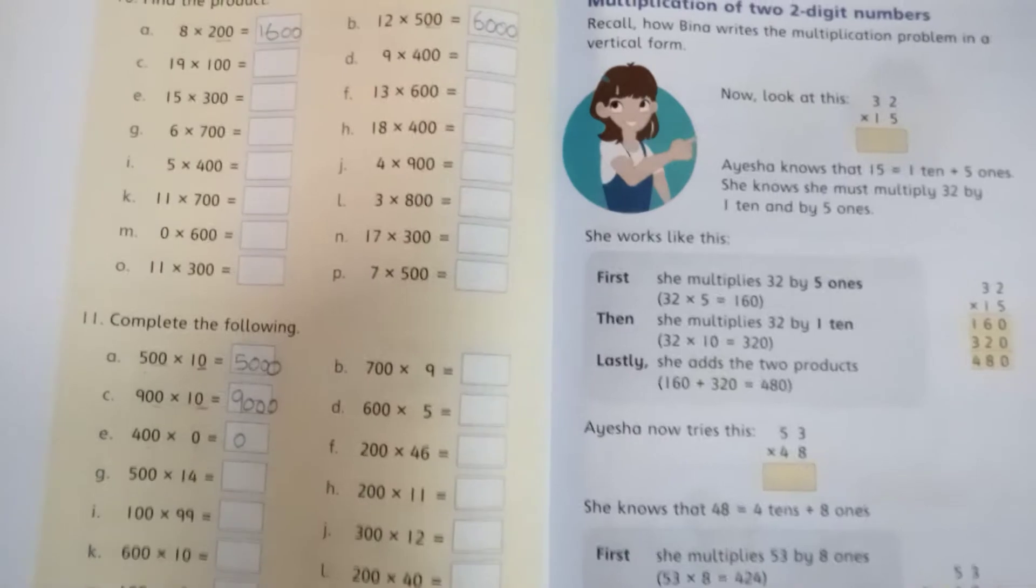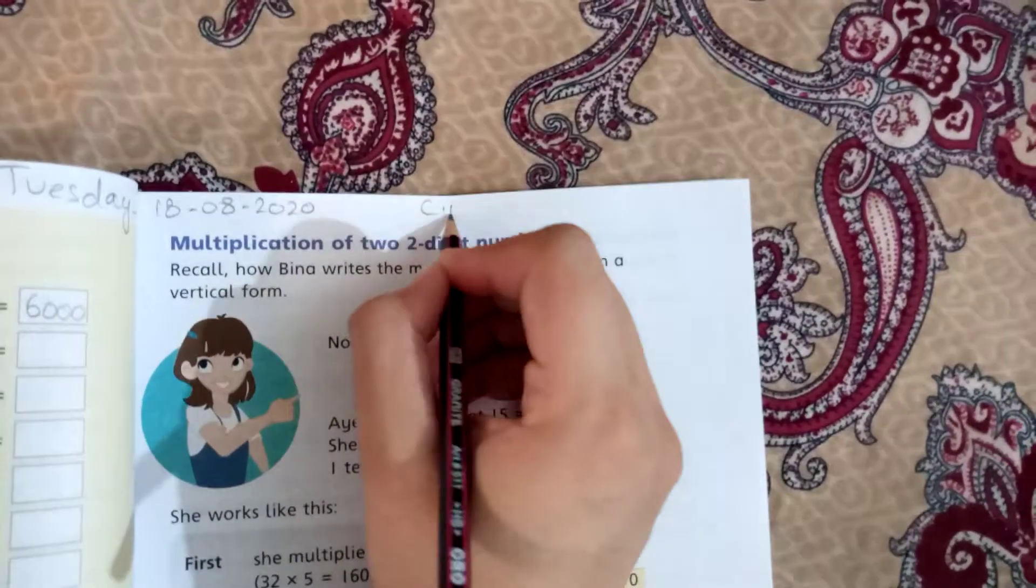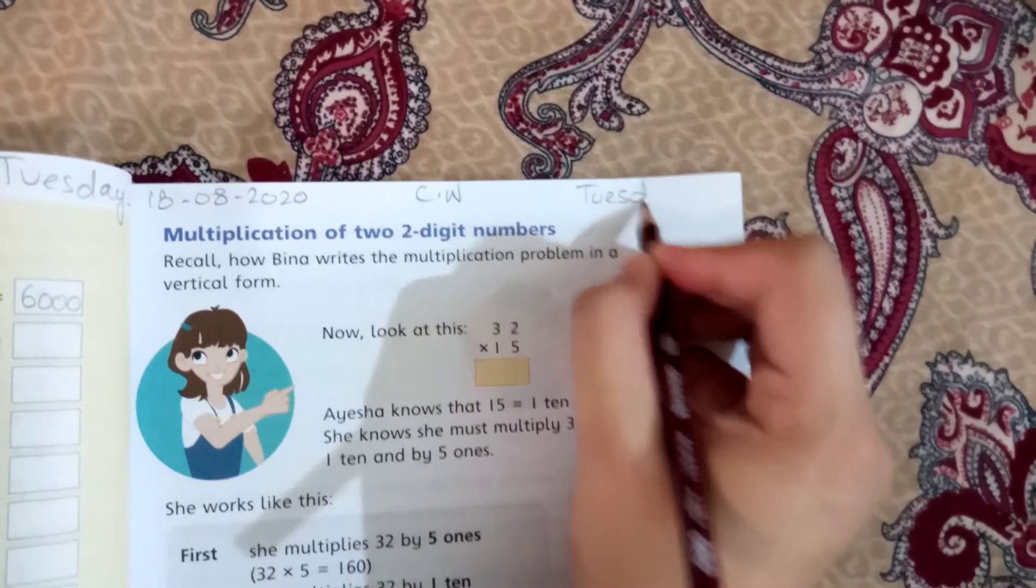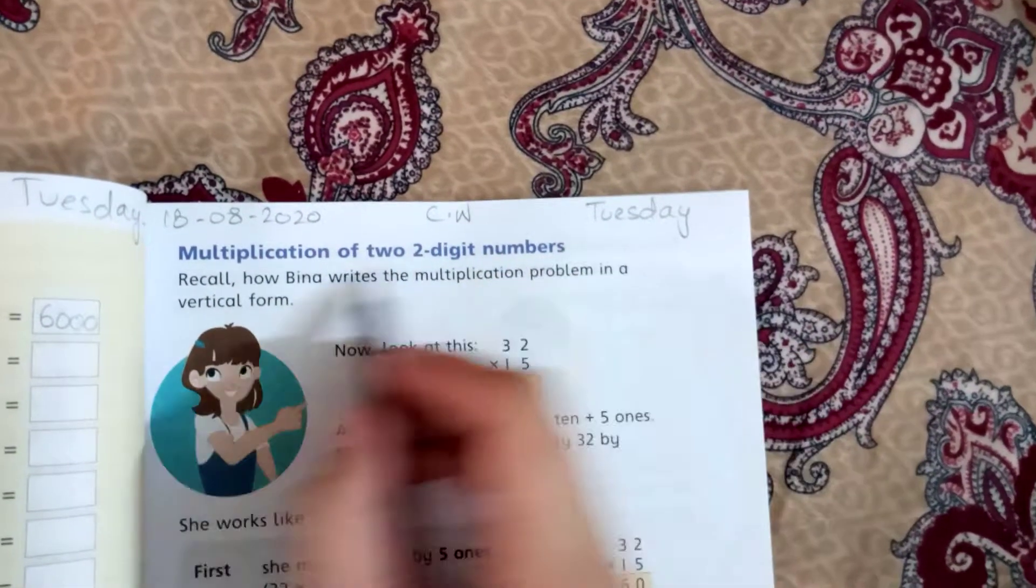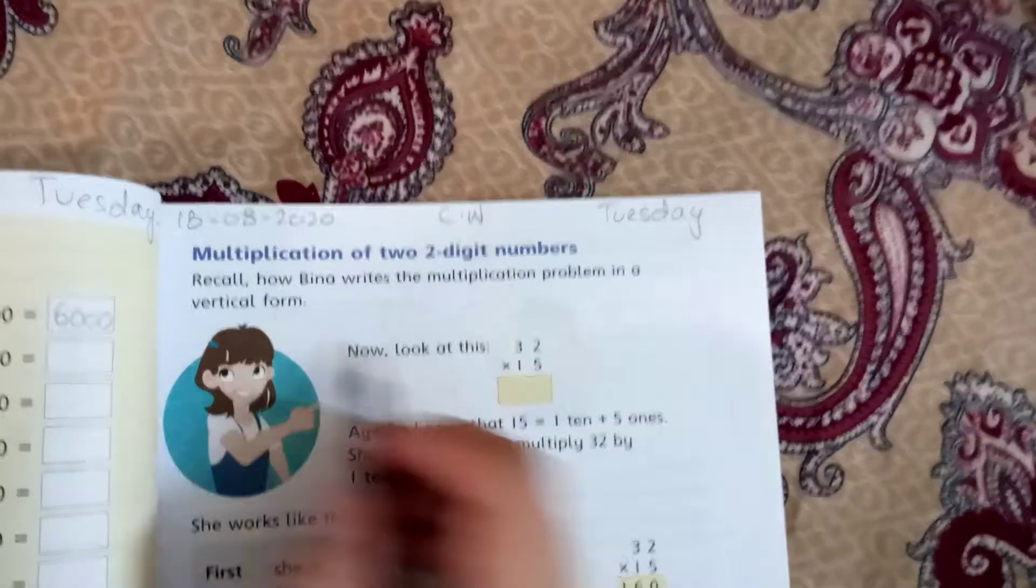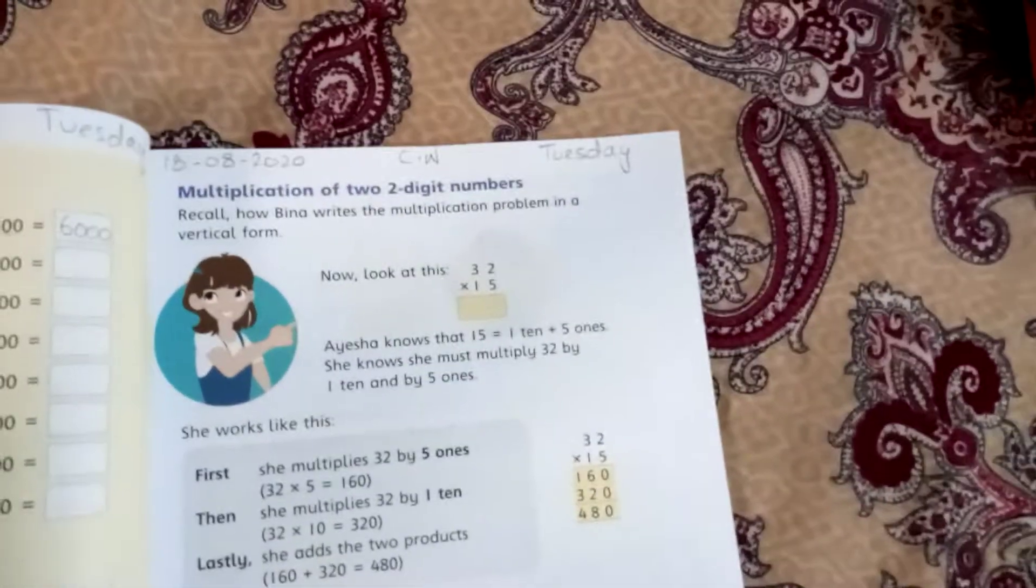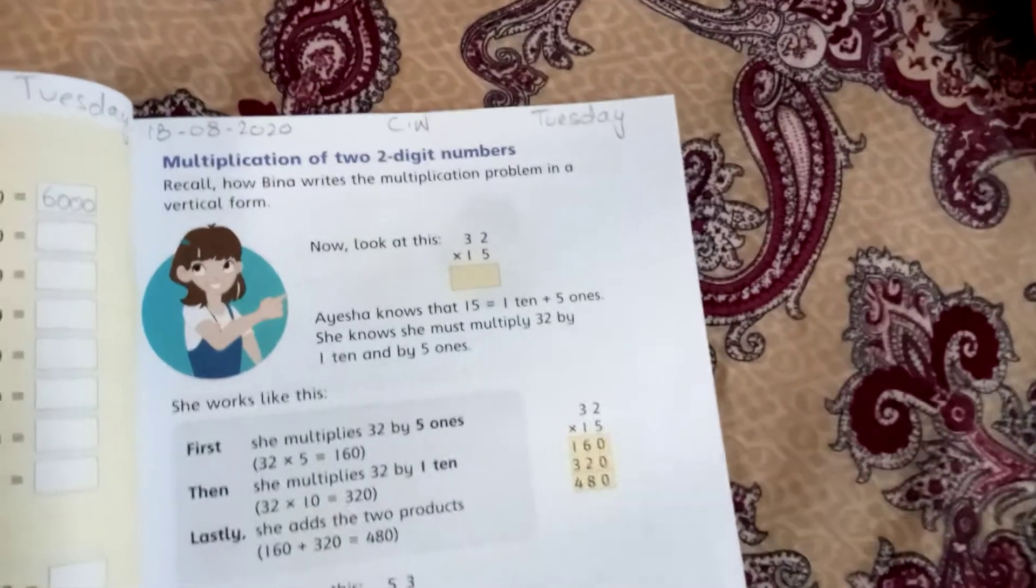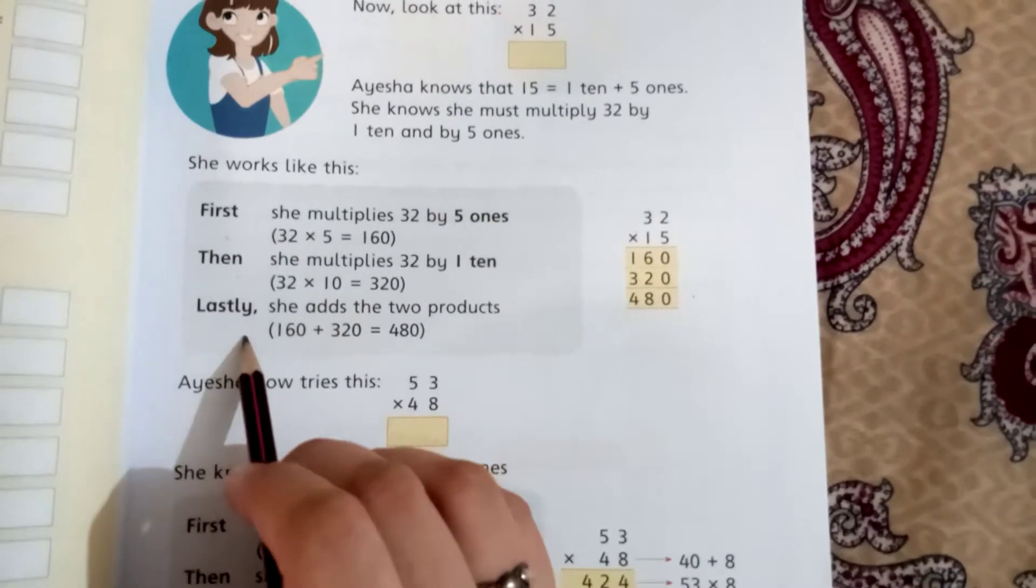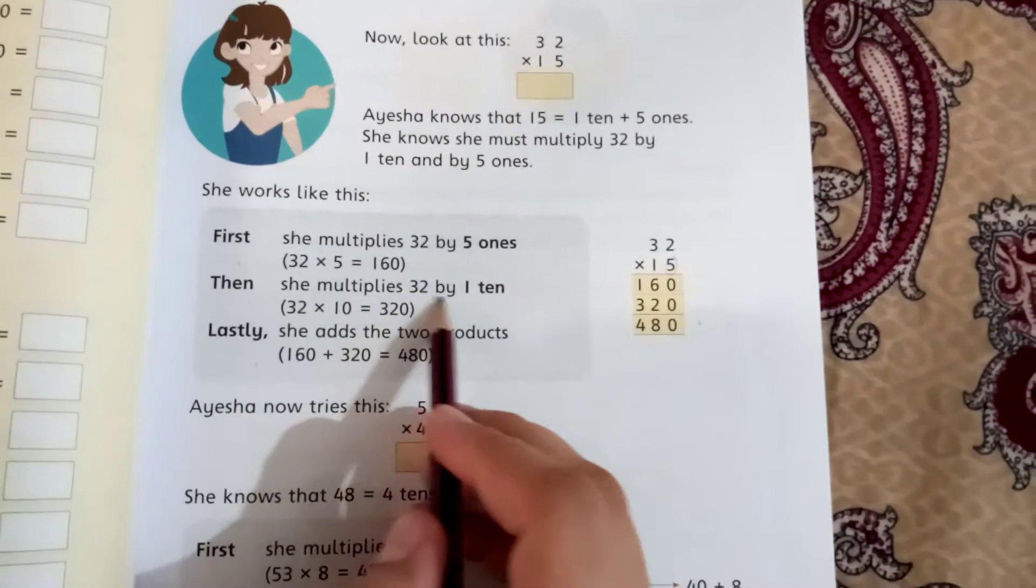This is the remaining part of the class. Come to page 73. You have to write the date: 18-8-2020, classwork. Multiplication of two-digit numbers - recall how we write the multiplication problem in vertical form. Now look at this: 32 x 15.